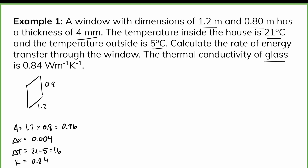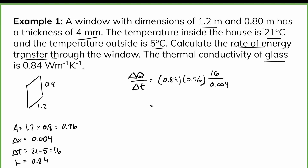We want to find the rate of energy transfer, ΔQ/ΔT. Using the formula with K = 0.84, A = 0.96, ΔT = 16, and Δx = 0.004, we calculate approximately 3,225 joules per second, which we round to about 3,000 joules per second. This means the house is losing 3,000 joules per second through that particular window.